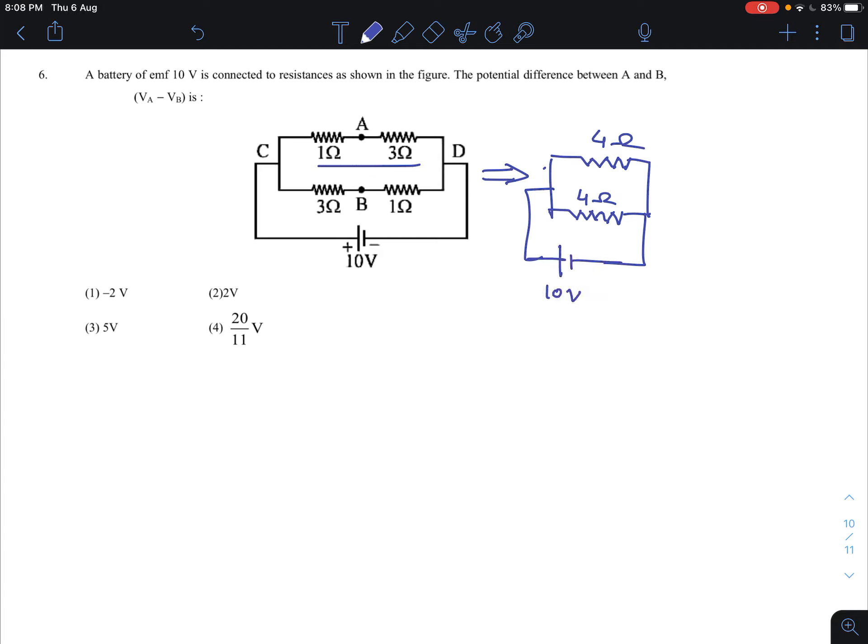The battery is 10 volt. Look at this equivalent. 4 and 4 are identical resistances connected in parallel. So 4 by 2, that is 2 ohm.